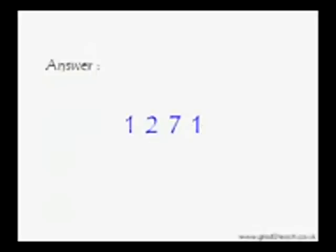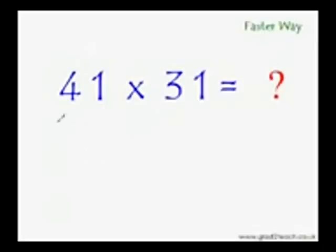So could you get it? All you have to do is multiply the first digit of this number with the first digit of the other number. You get the first digits of your answer. 4×3 is 12, so you get the first two digits of your answer.